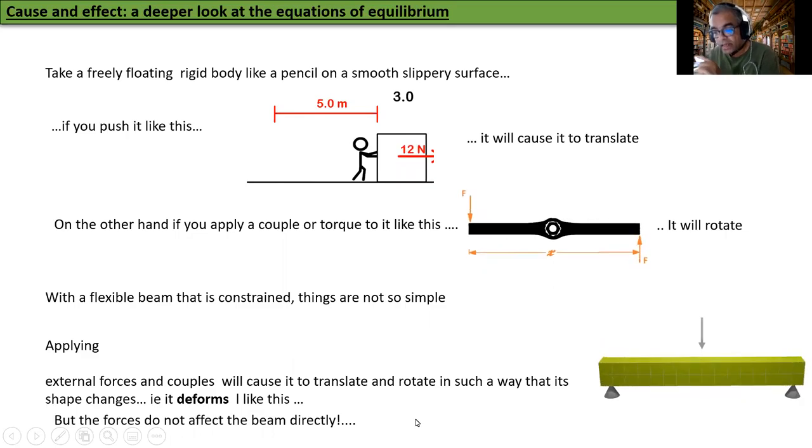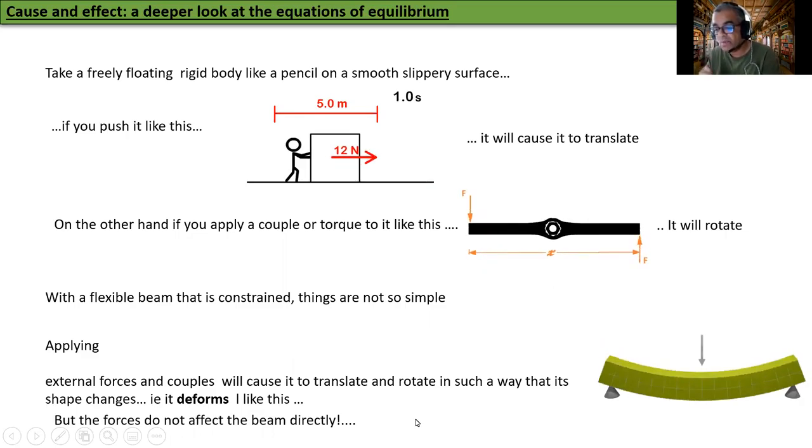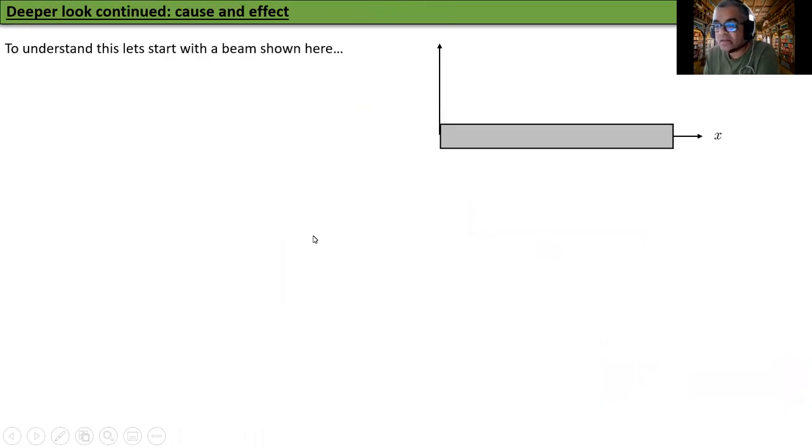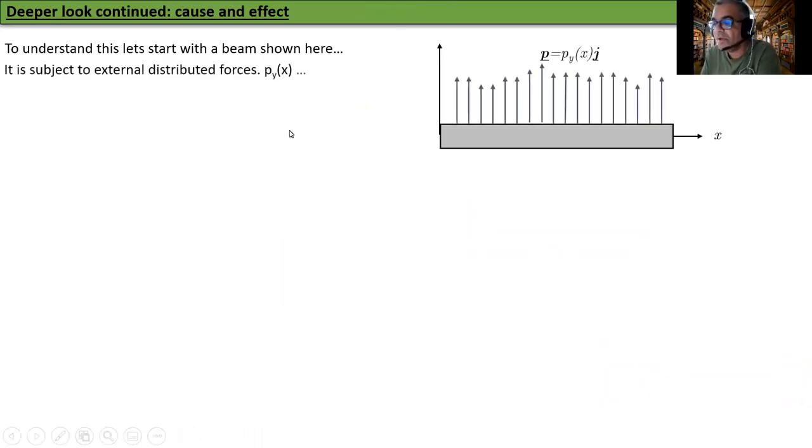But the external forces do not affect the beam directly. To understand this, let's start with the usual beam. And as usual, we have distributed forces PY and couples CZ. By now we should be familiar. I keep repeating this so that you become familiar with our directions and notation.